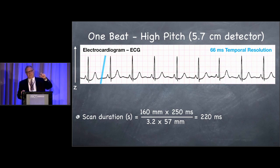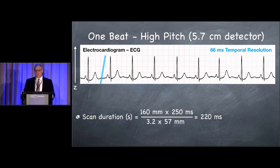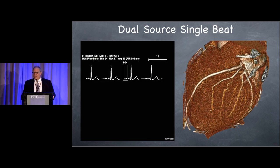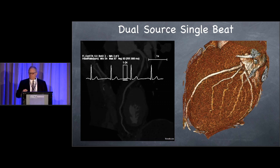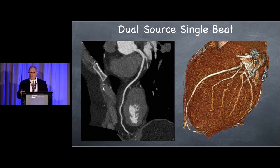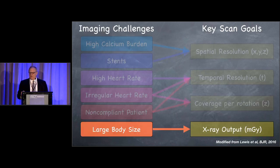We can also get single-heartbeat imaging with smaller-detector scanners using a high-pitch method, specifically with the dual source. The pitch used here is 3.2, and the scan duration is 220 milliseconds with a 66 millisecond temporal resolution, covering 16 centimeters of the patient. This can be a very effective method. Here you see a high-pitch dual-source single-beat scan with excellent demonstration of the left anterior descending coronary artery.